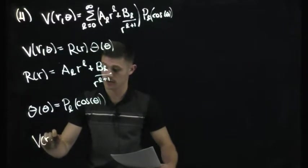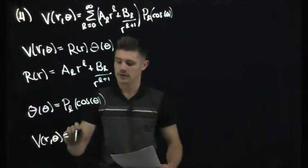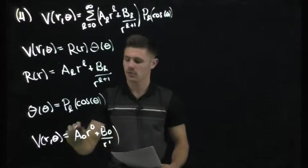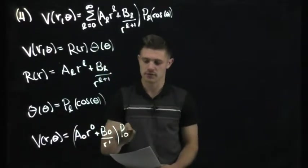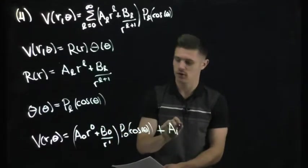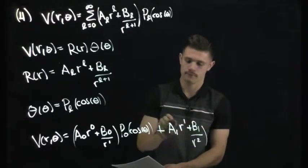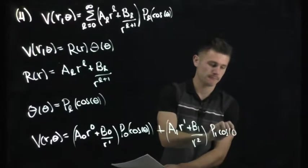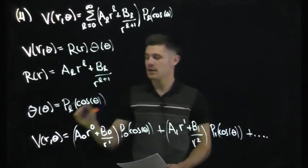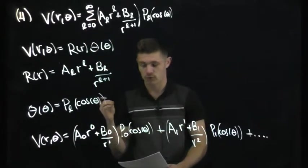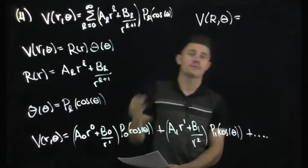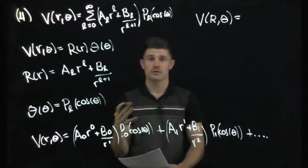So V(r, θ) in general could be A₀·r⁰ + B₀/r times P₀(cosθ), plus the next term A₁·r + B₁/r² times P₁(cosθ), and so on. We have every possible value of L from 0 to infinity expanded out. Jason gives us the boundary condition at the surface of the sphere — and the sphere has no charge inside, so it's essentially a hollow conducting sphere.